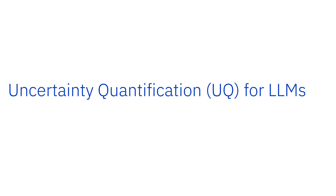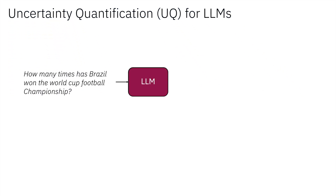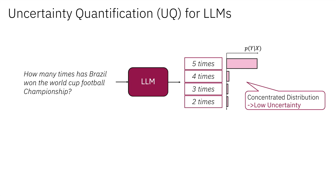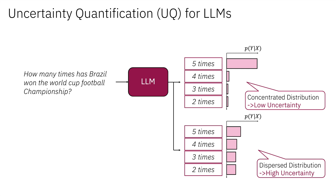Uncertainty quantification refers to the task of measuring the confidence of an AI model's output predictions. For large language models, uncertainty is often associated with the model's output distribution. For example, given an input query, we can measure the LLM's output probabilities over a set of candidate answers. If the distribution is concentrated, it indicates that the LLM has low uncertainty about the answer. If the distribution is dispersed, it means that the LLM has high uncertainty. A well-calibrated uncertainty measure can greatly improve the trustworthiness of large language models, because it tells us when we should trust the model's answers and when not.